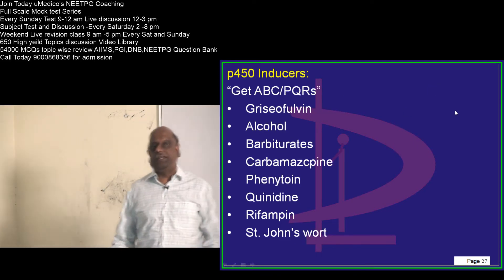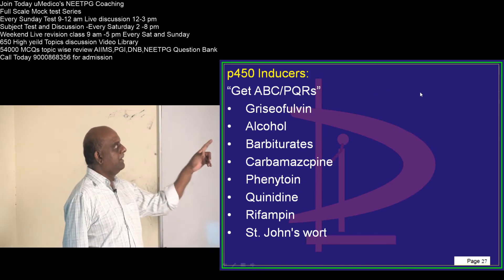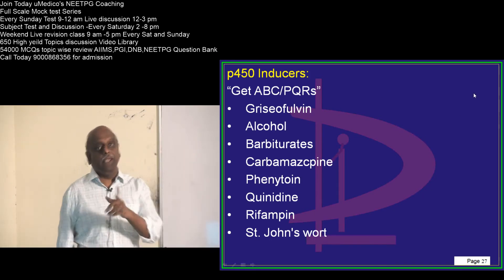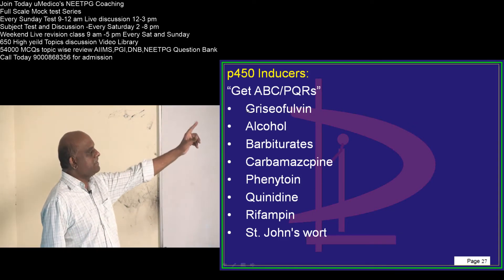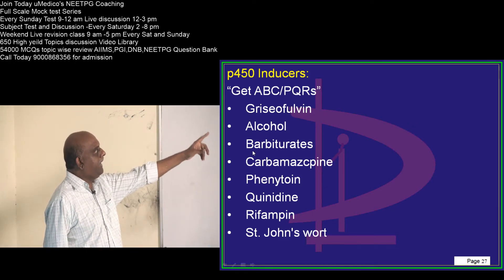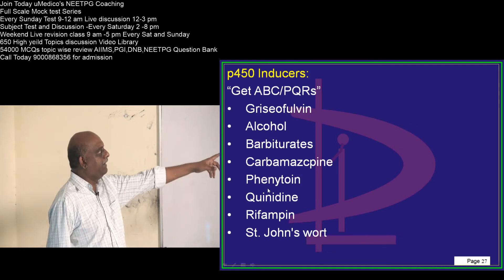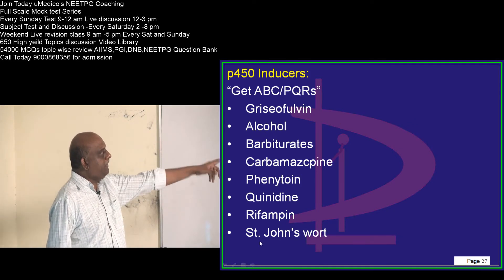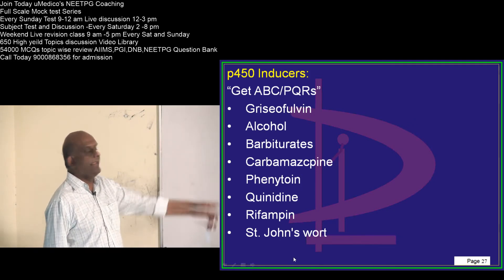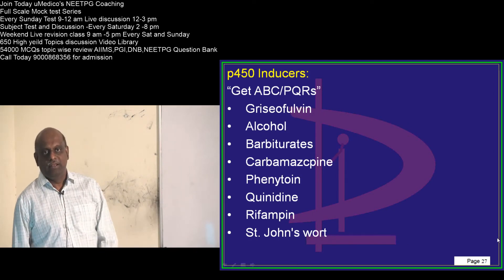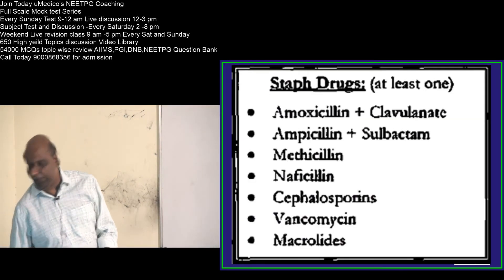P-450 inducers — remember 'GET ABC and PQRs': G = griseofulvin, E = ethanol (alcohol), T = tobacco(?), A = alcohol, B = barbiturates, C = carbamazepine, P = phenytoin, Q = quinidine, R = rifampicin, S = St. John's Wort. These are the inducers you need to remember.